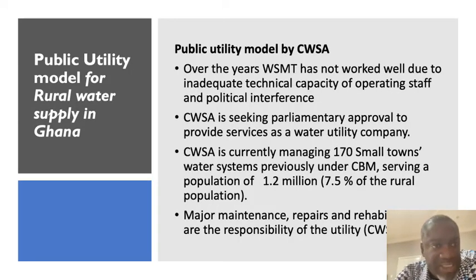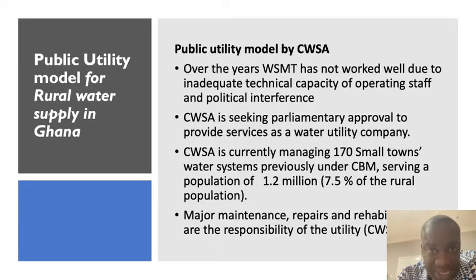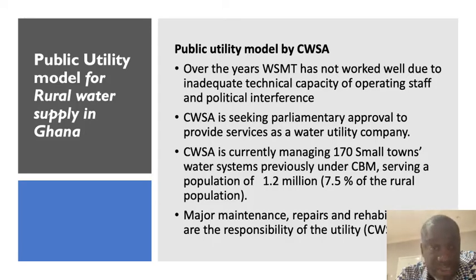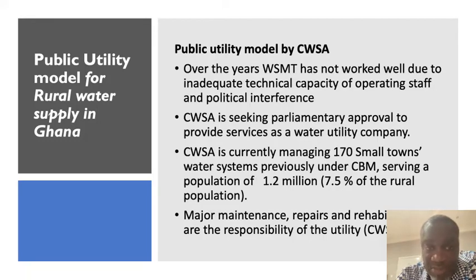The last model is the public utility model, managed in Ghana by the Community Water and Sanitation Agency. Over the years, they realized the shortcomings of community-based management related to technical capacity and, in some cases, political interference. So CWSA is seeking parliamentary approval to provide services as a water utility company focused on small town systems. They are currently managing 170 pipe schemes, which were previously under community management, serving a population of 1.2 million. They take responsibility for operations, maintenance, and major repairs.